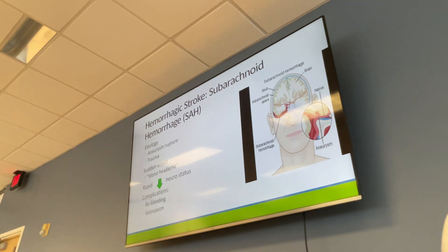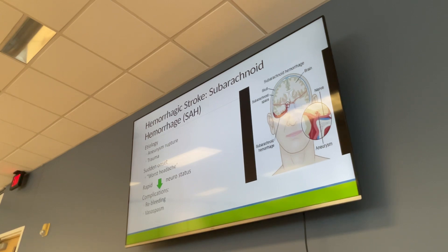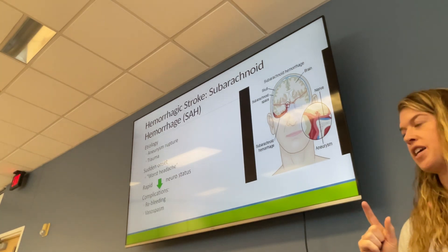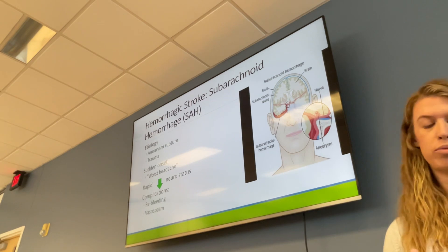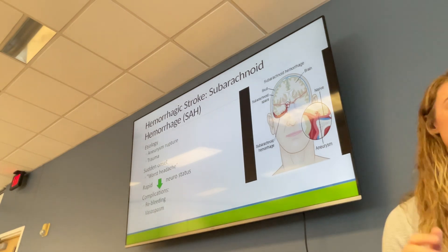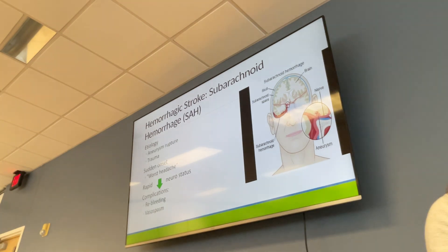Complications of hemorrhagic stroke include re-bleeding, as the vessel is now weakened after rupturing. Patients can also develop vasospasms and increased intracranial pressure.